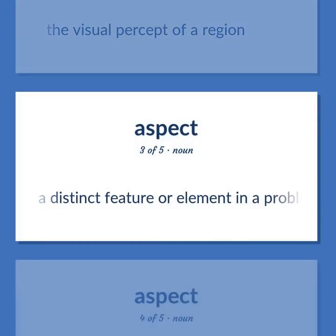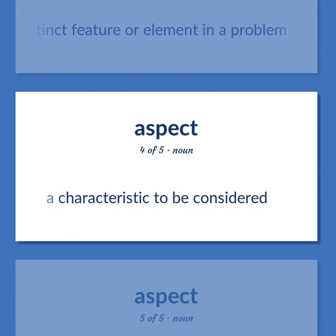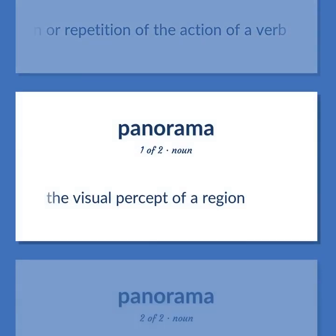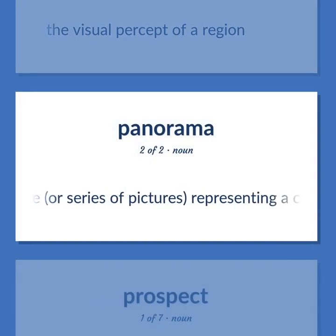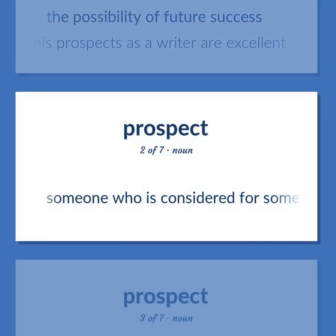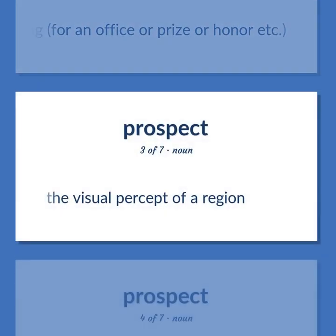Aspect: A distinct feature or element in a problem. A characteristic to be considered. The beginning or duration or completion or repetition of the action of a verb. The visual percept of a region. A picture, or series of pictures, representing a continuous scene. Prospect: The possibility of future success. His prospects as a writer are excellent. Someone who is considered for something, for an office or prize or honor etc. The visual percept of a region.